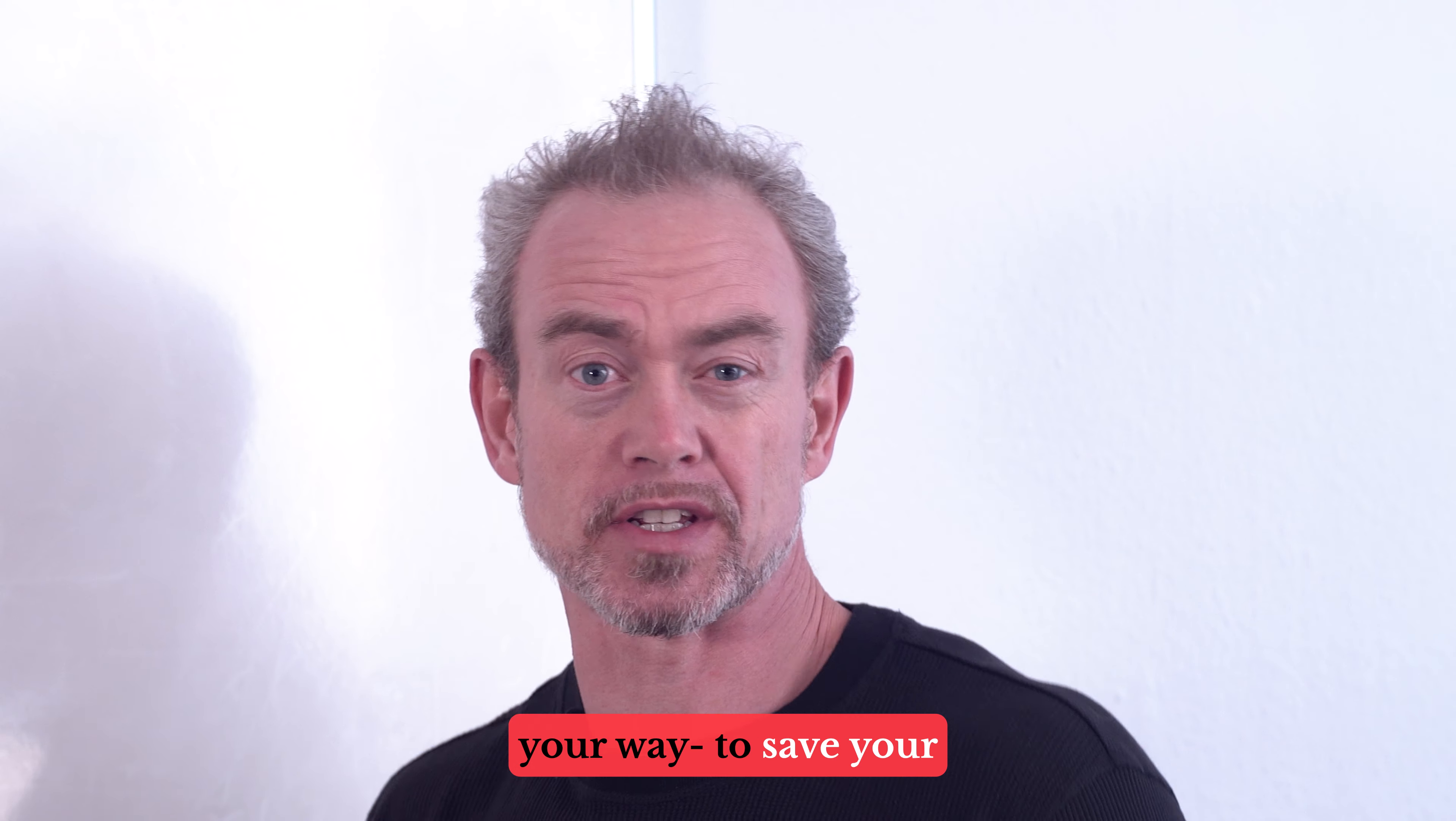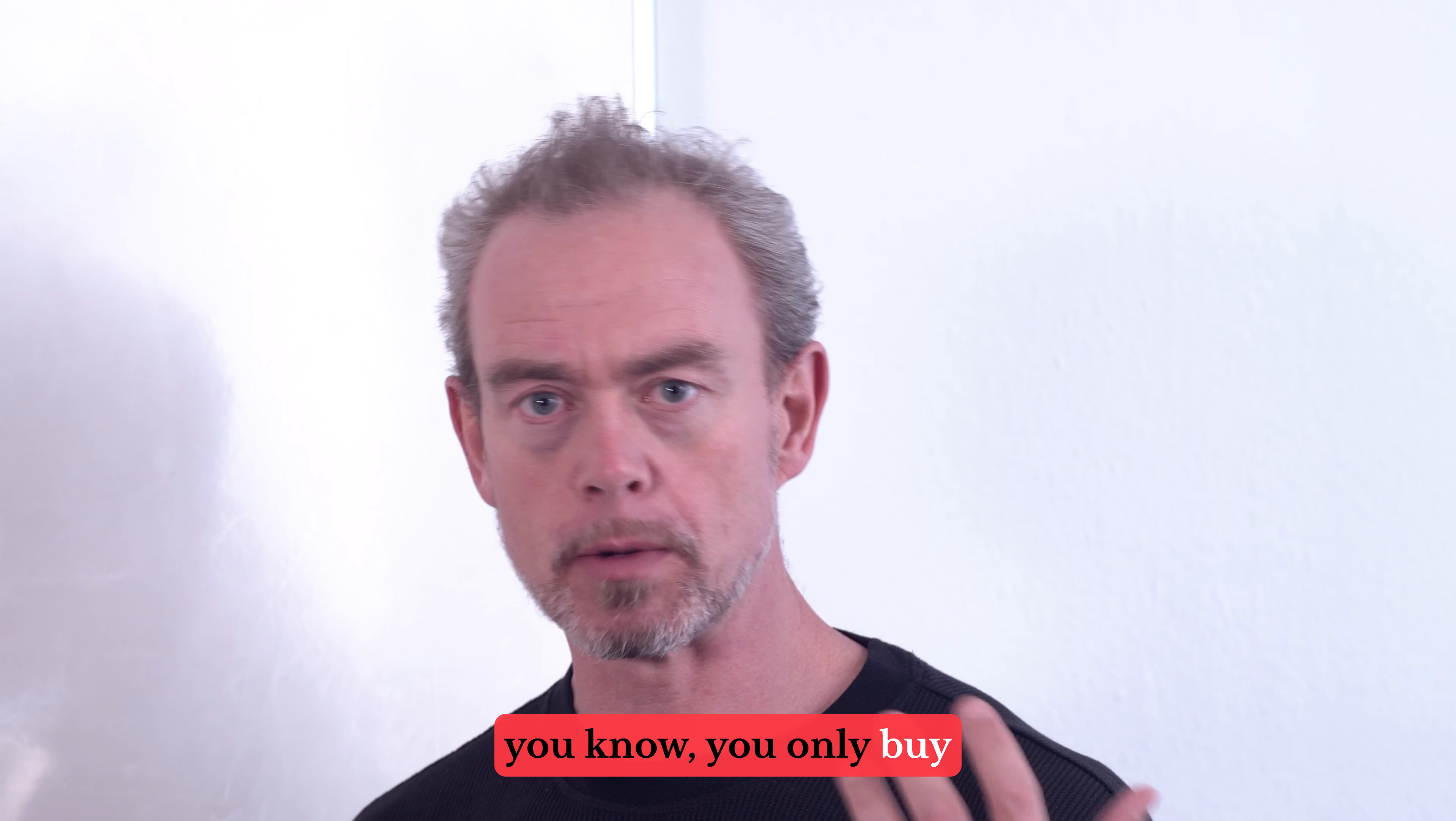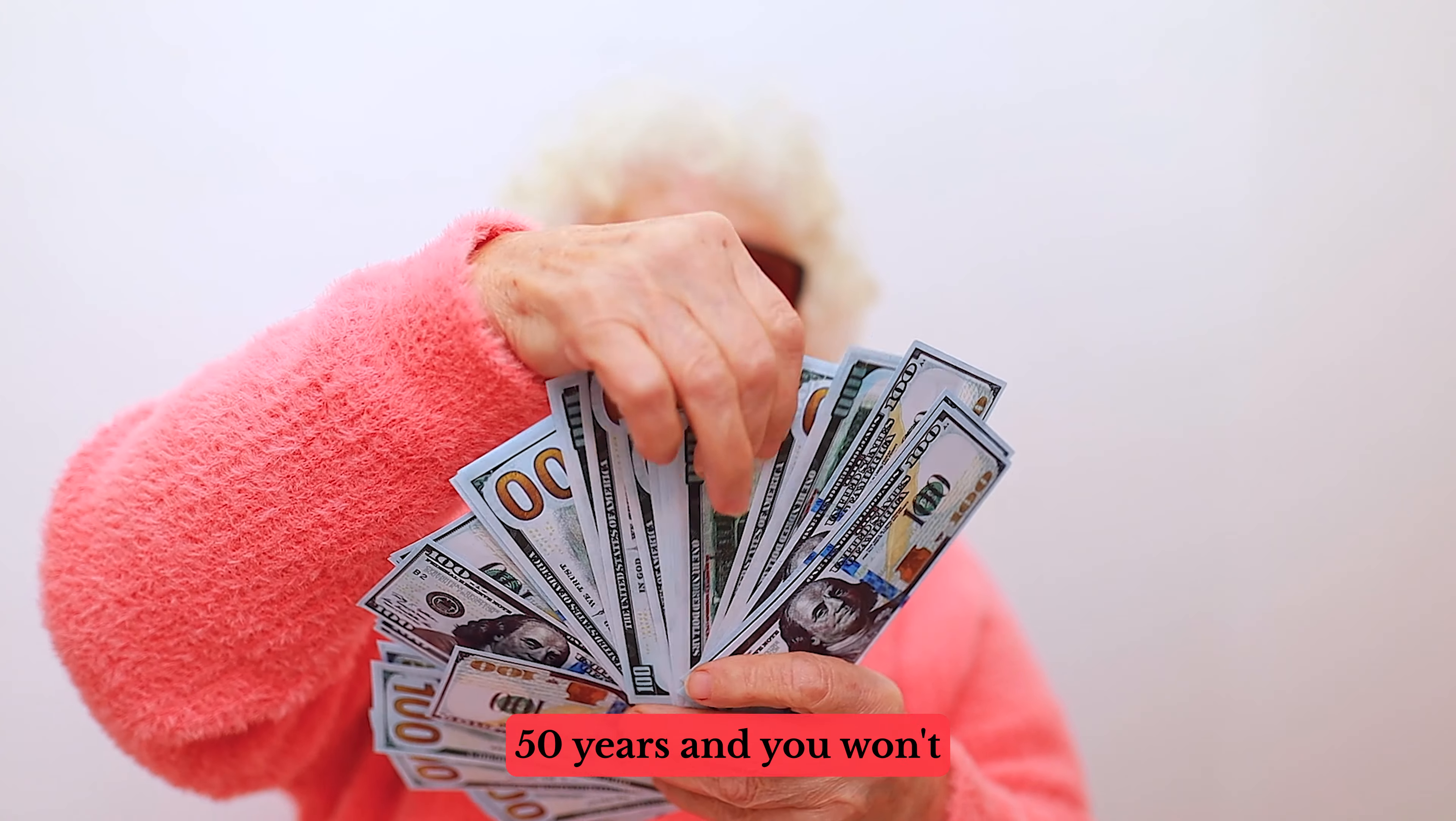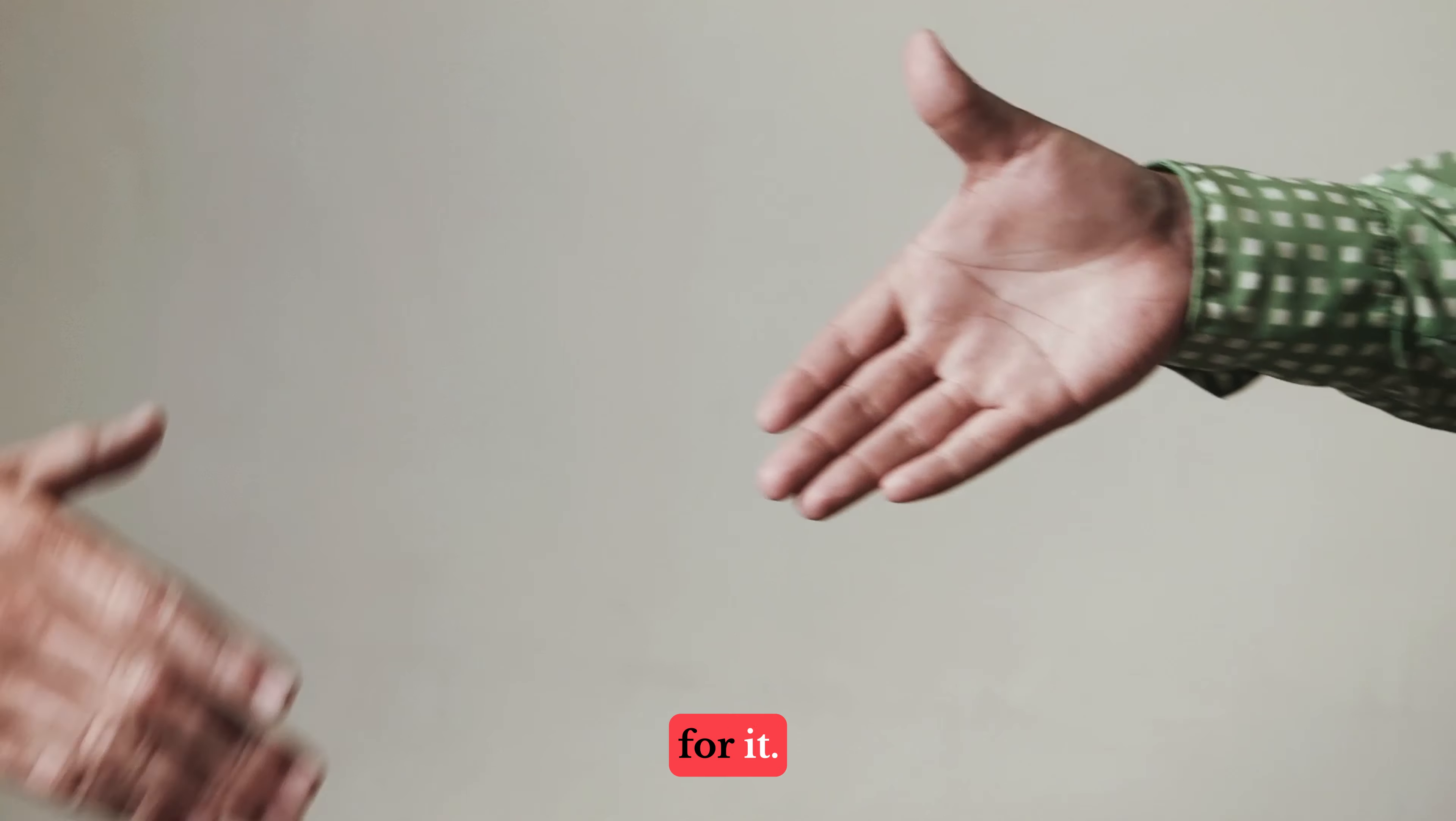It's really hard to pinch your way or save your way to a fortune. So if you save all your life and you only buy secondhand clothes and you cook everything yourself and buy at Costco or whatever, you can become a millionaire. But it will take you 50 years and you won't enjoy the process. Another way to become a millionaire is to just deliver a lot of value to someone else and charge for it.